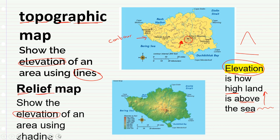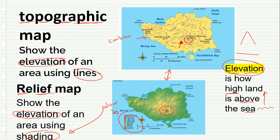The relief map uses shading or colors to show height. These two maps show the same place — using colors or using lines, both show how high something is above the sea. That word again is elevation. The map that uses lines is called topographic, and the one that uses colors is called relief.